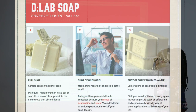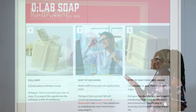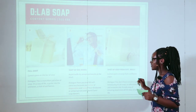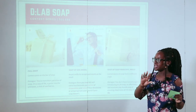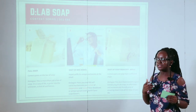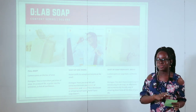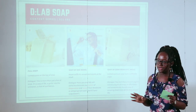The third panel shoots the soap from a different angle as opposed to the first one, and we say: 'You don't have to worry again. Introducing Design Lab soap — an affordable and economically friendly way of ensuring cleanliness all the days of your life.' With just these three panels in the storyboard, we've seen how we want the ads to go and the direction in which we want it to flow. So if we're going to shoot, it's very easy — each panel is a scene. We get our models, we get the soap, we get our cameras and we are done.